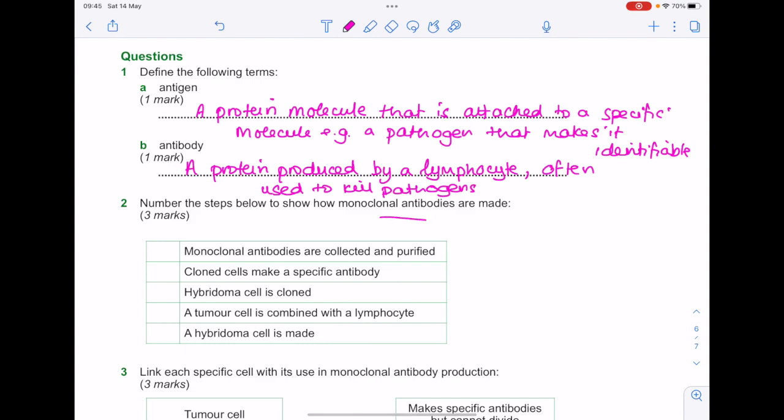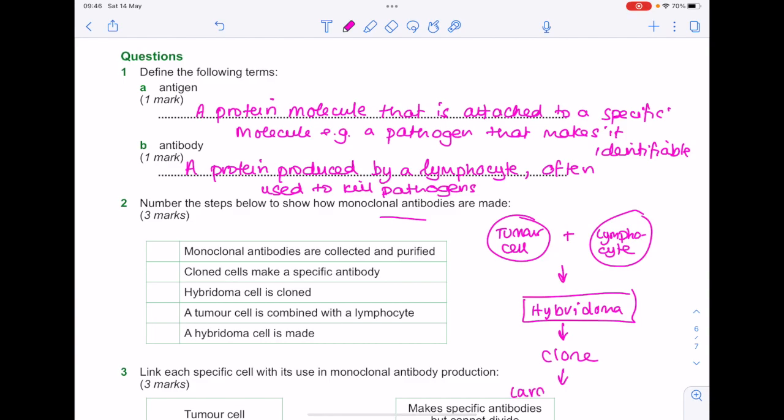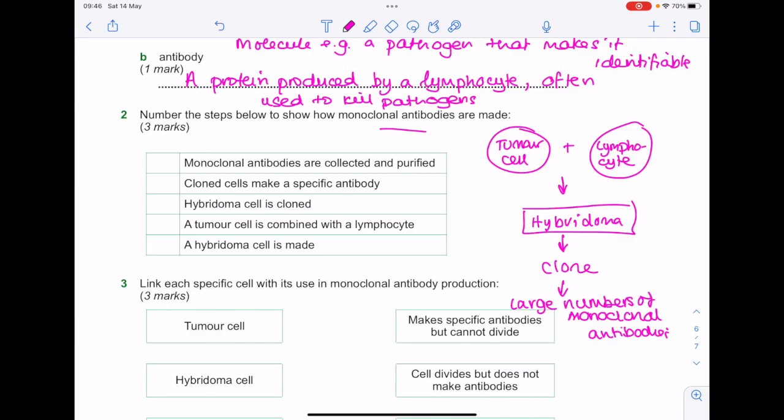Number the steps below to show how monoclonal antibodies are made. So remember we need to combine both a tumor cell and a lymphocyte because they're the two cells with useful properties in order to form a hybridoma, which will then be cloned to produce large numbers of monoclonal antibodies. So what's the order of the steps? Number one, a tumor cell is combined with a lymphocyte. Number two, that produces a hybridoma. Number three, we want to clone that very useful hybridoma. Number four, the clone cells make a specific antibody. And number five, the monoclonal antibodies are collected and purified.